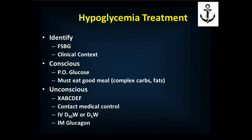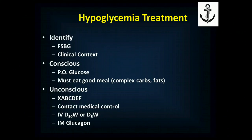If they're unconscious: XABCDEF, check that finger stick blood glucose, contact medical control, and give either IV D50W — 50% dextrose in water — or IV D5W. A 500 ml bag of D5W is equivalent to the 50 ml of D50W that we typically give. Or, if available, intramuscular glucagon can also be given. Remember, though, if they've already released all their own glucagon and burned through their glycogen stores, that won't be as effective.